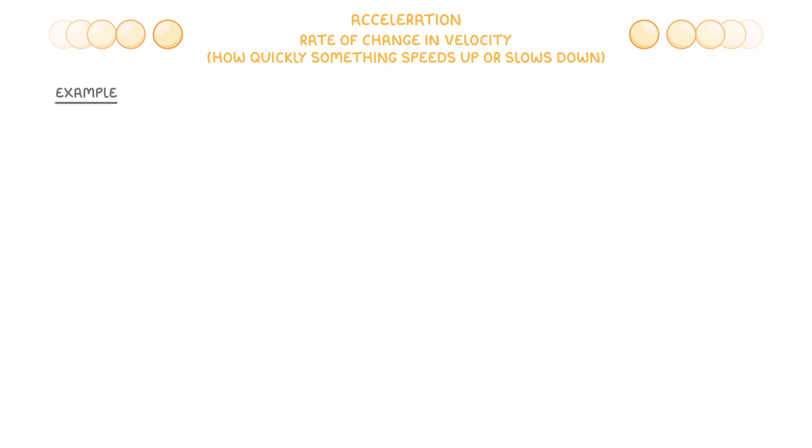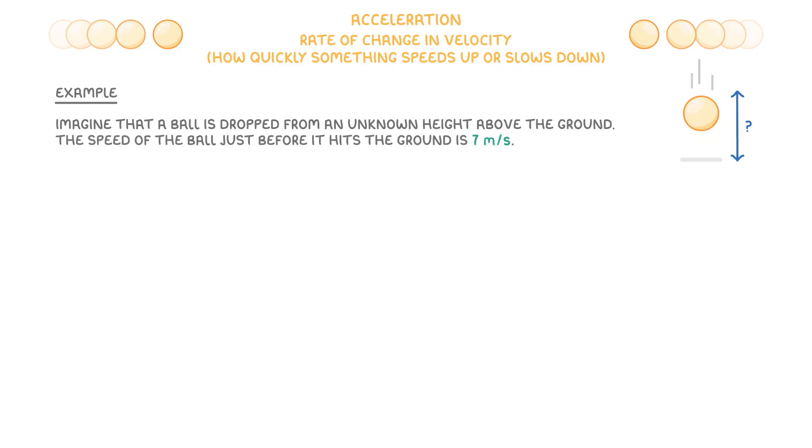For an example, let's imagine that a ball is dropped from an unknown height above the ground. The speed of the ball just before it hits the ground is 7 meters per second. Calculate the height from which the ball is dropped, ignoring air resistance.